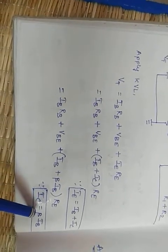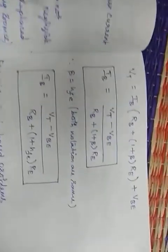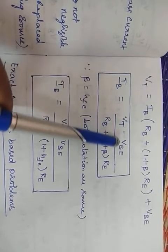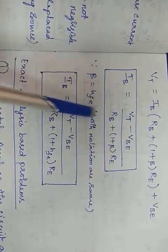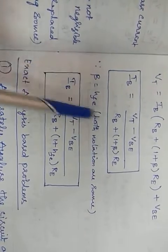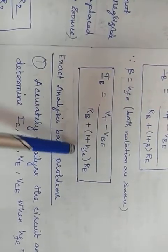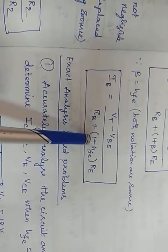After simplification, IB = (VT − VBE) / (RB + (1 + β) × RE). Note that β and HFE are the same — both represent forward current gain, as discussed in Module 1. So IB = (VT − VBE) / (RB + (1 + HFE) × RE).